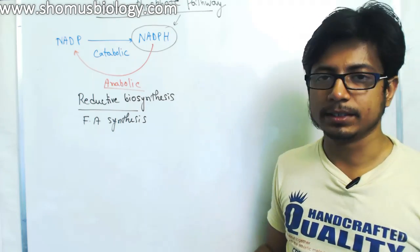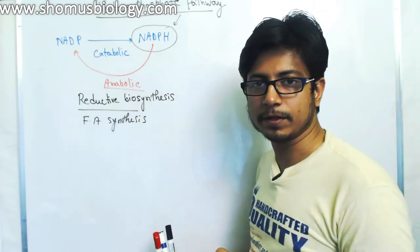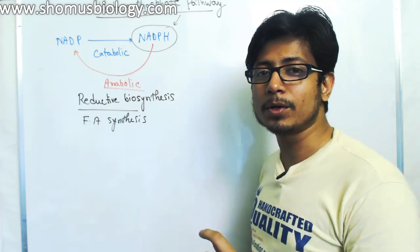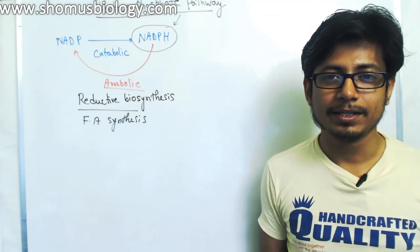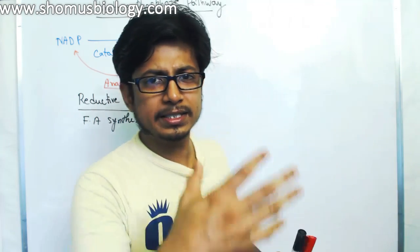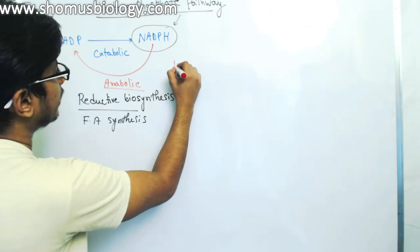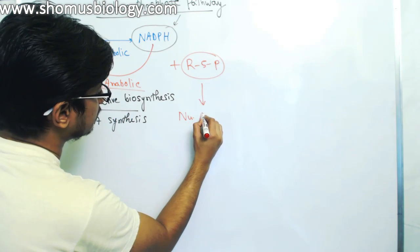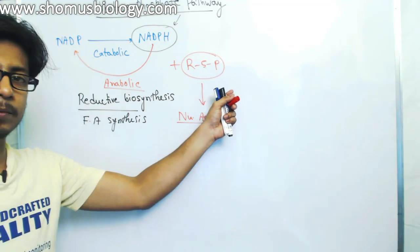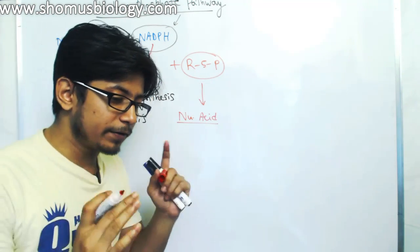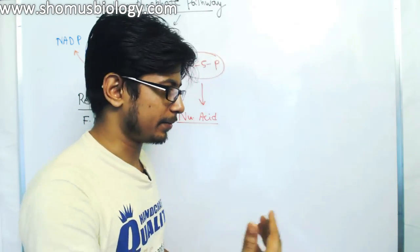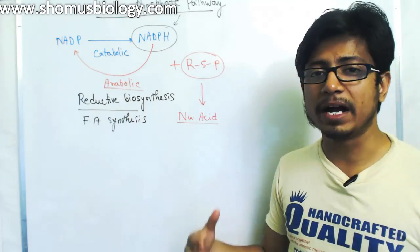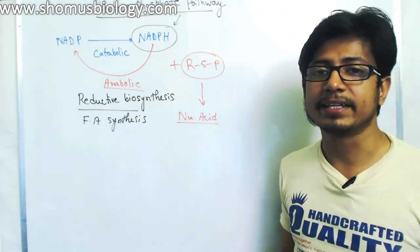During the pentose phosphate pathway, we not only produce NADPH but also produce another very important molecule — the 5-carbon ribose sugar. Utilizing glucose as a substrate, a series of reactions gives us ribose-5-phosphate, and ribose-5-phosphate is a material used to produce nucleic acids. So ribose-5-phosphate production and NADPH production are two very important outputs needed for anabolic reactions like nucleic acid synthesis and fatty acid synthesis.